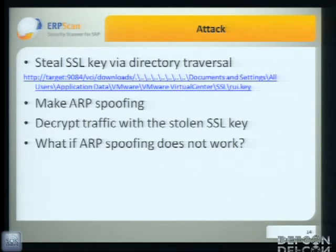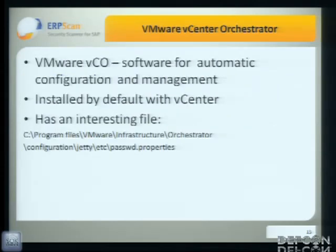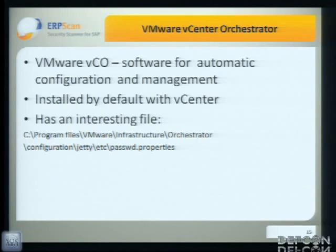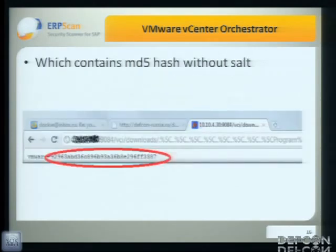But what if ARP spoofing doesn't work? We did a little bit of analysis and found vCenter Orchestrator — software for automatic configuration and management of vCenter. It ships by default with vCenter and has interesting files like gate, etc., and password.properties. Each contains an MD5 hash without a salt. Nowadays, as we know, that's not very secure.